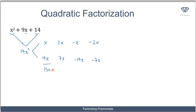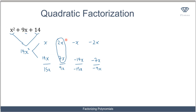Let's try adding all the pairs together: x + 14x gives 15x; 2x + 7x gives 9x; minus x + minus 14x gives minus 15x; minus 2x + minus 7x gives minus 9x. The pair that satisfies both conditions is 2x and 7x — they multiply to 14x squared and add to 9x. So I replace 9x with 2x plus 7x.